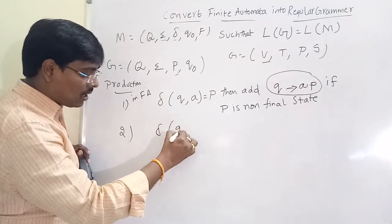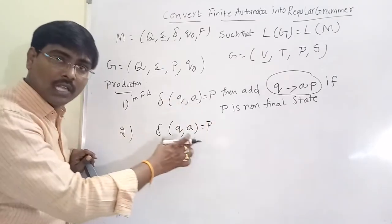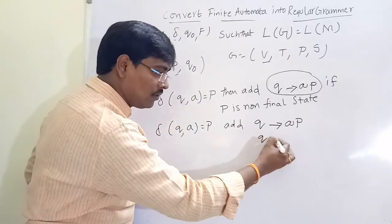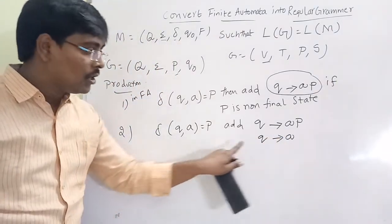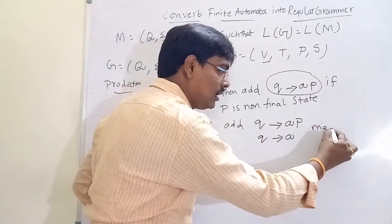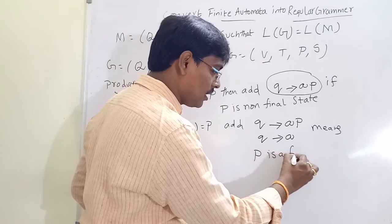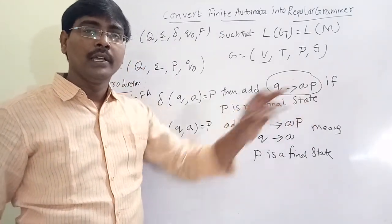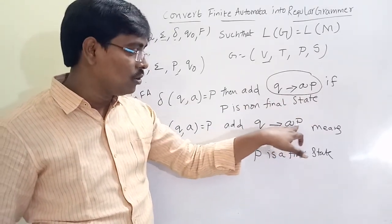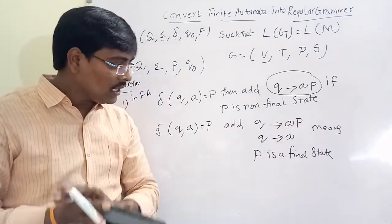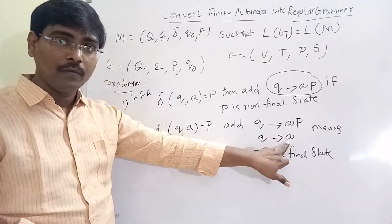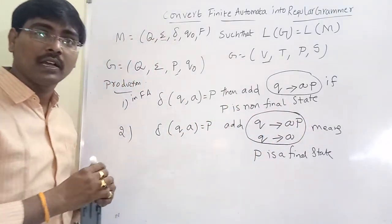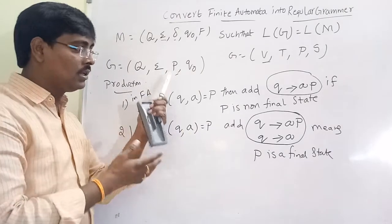The second case uses the same transition: delta(q, a) = p. If p is a final state, then we add two productions: q → aP, and also q → a. The production q → a, containing only a terminal, means it reaches the final state. So, if p is a non-final state we have only a single production; if p is a final state we have two productions — one is q → aP and another is q → a.